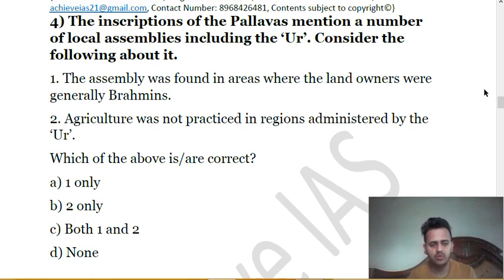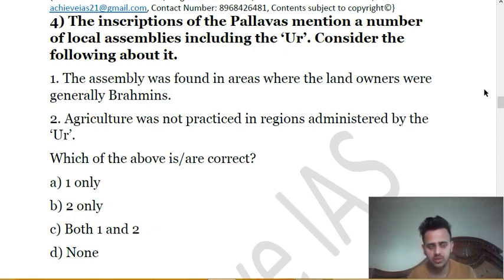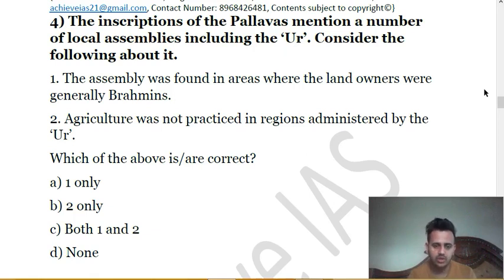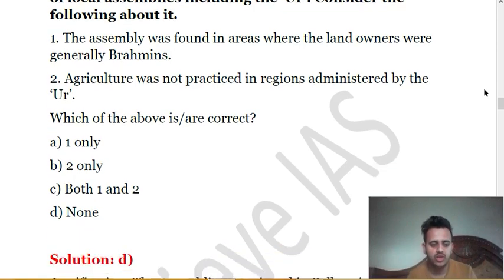The first statement is clearly wrong. The Pallavas had various types of local assemblies — in places where Brahmins were the landowners, the local assemblies were known as Sabha, not Ur. Ur was basically a village assembly in those villages where the land-owning class was not Brahmins. The second statement is also incorrect because agriculture was practiced in regions administered by Ur — ultimately, the village is where agriculture is practiced. Both statements are incorrect, so the solution is D.